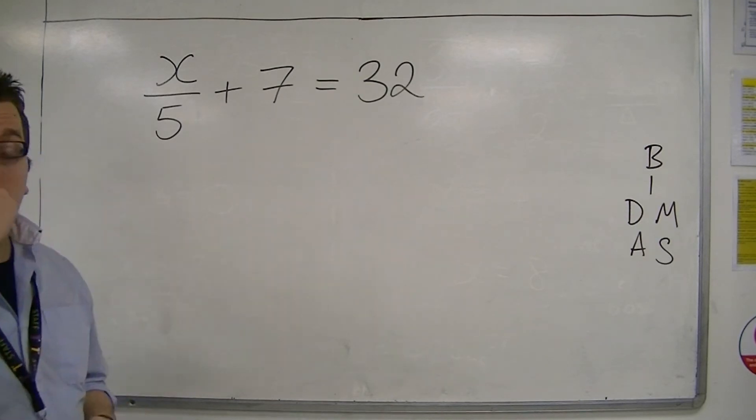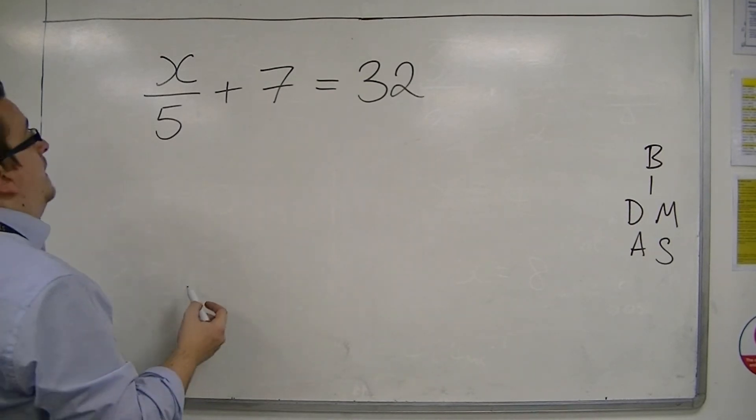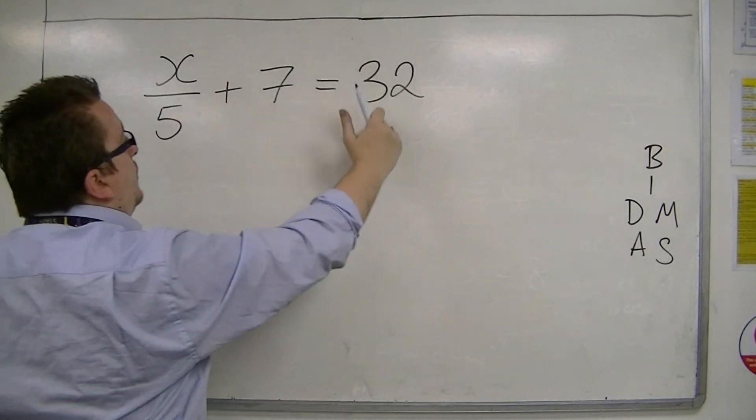Okay. So what we have here is x over 5 plus 7 equals 32.